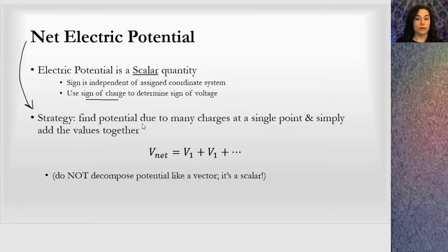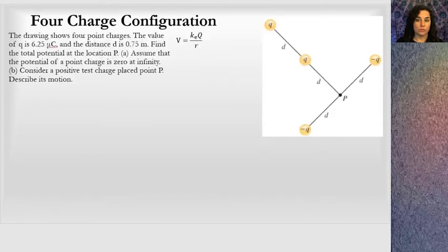When we're finding net electric potential, the strategy here is going to be to find the potential due to the many charges at a single point and simply add those together. We're going to find the potential of one charge, the potential of another charge. We just run it kq over r, find all of those values, and then just simply add them together. The example I picked out is a four charge configuration. And we're going to see this again in another problem that I do in a couple of lessons.